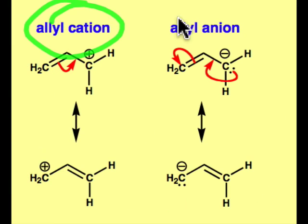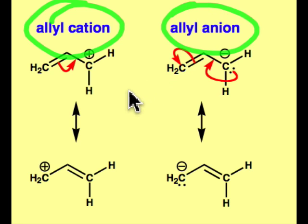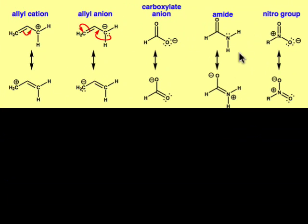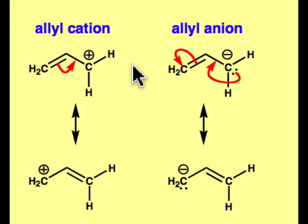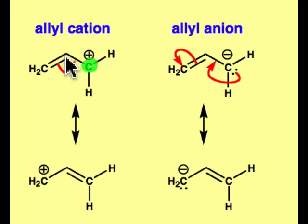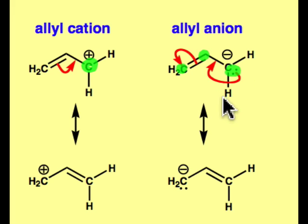We're going to use the allyl cation and the allyl anion as our prototypical three atom pi systems. The molecular orbital pictures for these other three atom pi systems are going to be very similar in appearance to the allyl cation and the allyl anion. The main difference between them is the number of electrons in the pi system. In the case of the allyl cation, there's going to be only a two-electron pi system — when we construct the molecular orbitals by the LCAO method, we'll populate each of the p orbitals with one electron and then have one p orbital that's empty. In the case of the allyl anion, there'll be a single electron in each of these atoms and then the third p orbital contributing to the molecular orbitals has a pair of electrons in it.